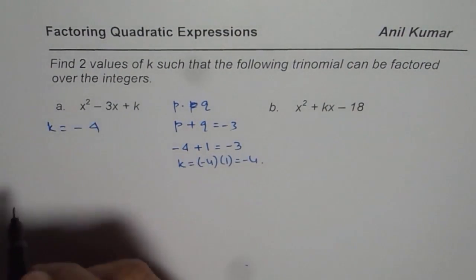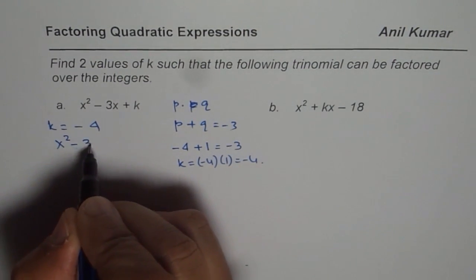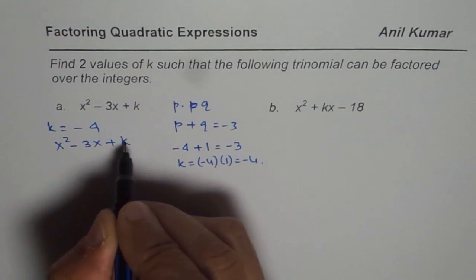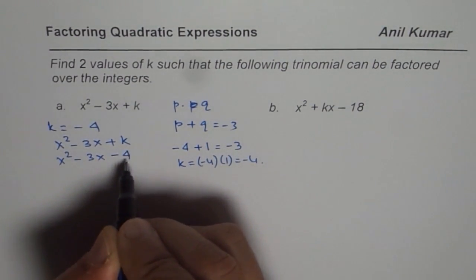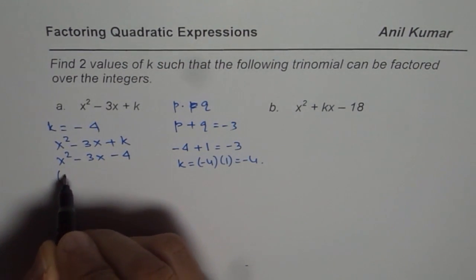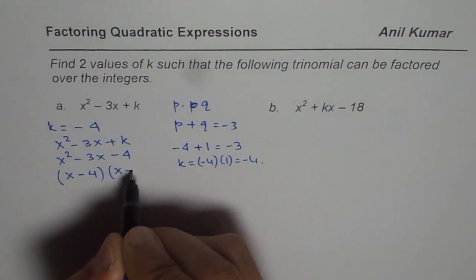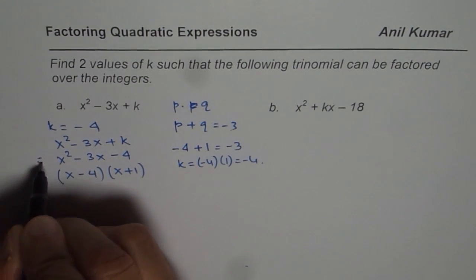Do you see that? If k is minus 4, I could factor this. The equation becomes x squared minus 3x plus k, and if I write k as minus 4, that is x squared minus 3x minus 4. I could factor this equation as x minus 4 times x plus 1. You get the concept, right? That is how we can do it.